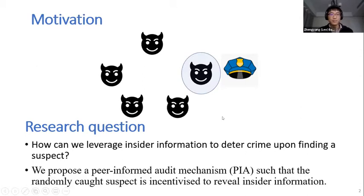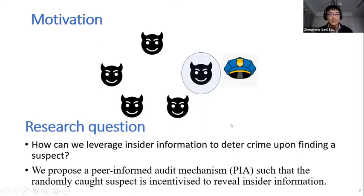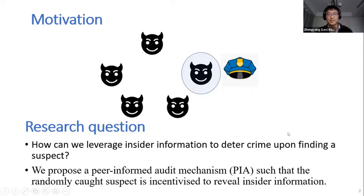We propose the Peer Informed Audit mechanism — we will refer to this as PIA for short — such that a randomly caught suspect is incentivized to reveal insider information about these networks.